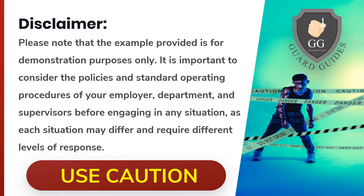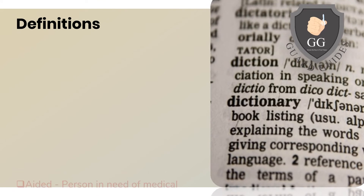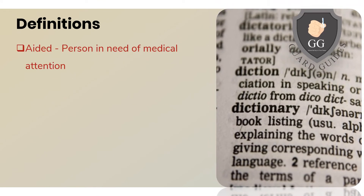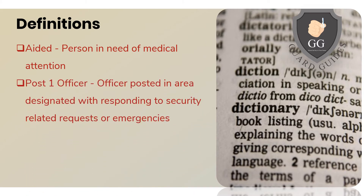Definitions. Aided: a person in need of medical attention, whether they be students, staff, visitors, or pedestrians. The person who is injured, sick, or otherwise needs medical assistance is known as the aided. Post One Officer: the officer posted in the area designated with responding to security-related requests or emergencies. For the purposes of this presentation, the officer posted in the area where the aided is requesting assistance will be known as Post One Officer.